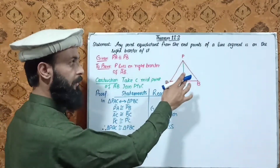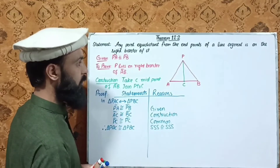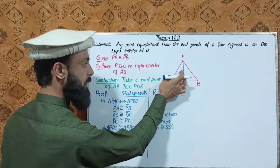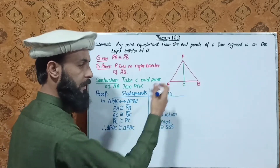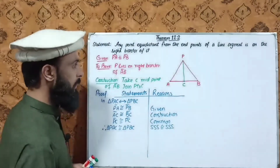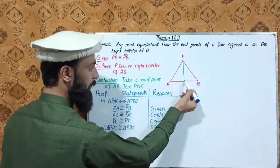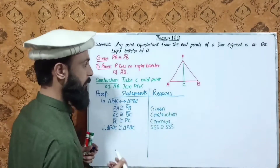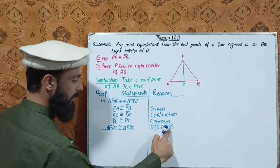There are four types of congruency discussed in the basics of this lecture. We discussed SSS — side-side-side — congruency. Now, using this SSS congruency, triangle PAC equals triangle PBC. The corresponding angles — angle 1 and angle 2 — are congruent.